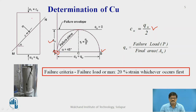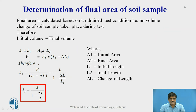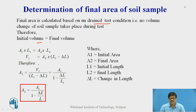When we perform the experiment, some criteria are to be followed. The failure criteria is considered as the failure load at which the soil sample fails, or a total 20 percent strain, whichever occurs first. For determining the final area — because stress is determined as load divided by final area — at the time of failure, the area of the soil sample is usually higher than the initial area due to bulging. Since the test is undrained, our assumption is that no volume change of the sample is taking place. Therefore, initial volume equals final volume.